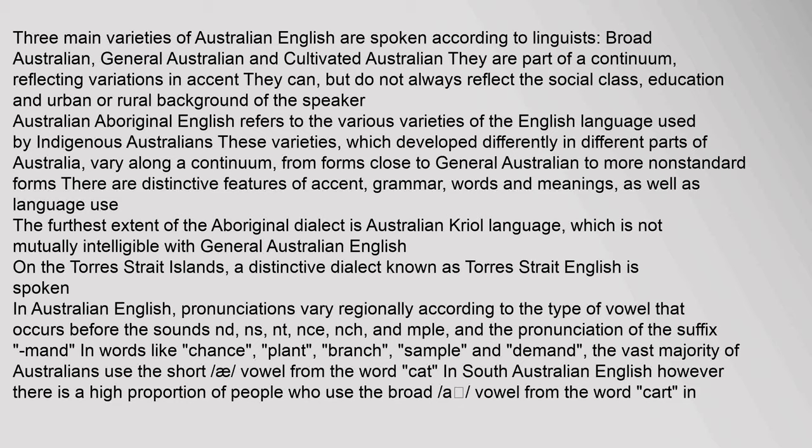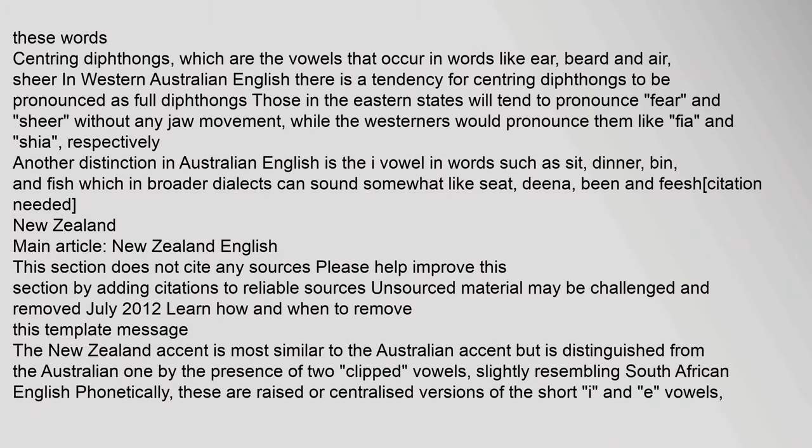On the Torres Strait Islands, a distinctive dialect known as Torres Strait English is spoken. In Australian English, pronunciations vary regionally according to the type of vowel that occurs before the sounds nd, ns, nt, nce, nch, and the suffix in words like 'chance,' 'plant,' 'branch,' 'sample,' and 'demand.' The vast majority of Australians use the short 'a' vowel, while in South Australian English there is a high proportion of people who use the broad 'a.' In Western Australian English, there is a tendency for centering diphthongs to be pronounced as full diphthongs, so that 'fear' and 'shear' are pronounced like 'fia' and 'shia.'